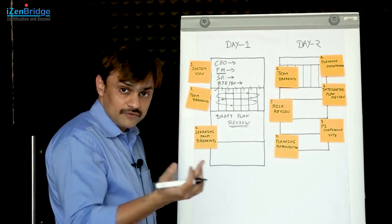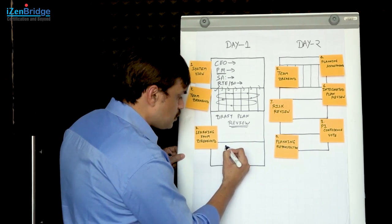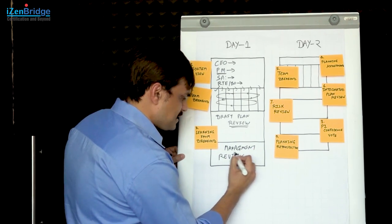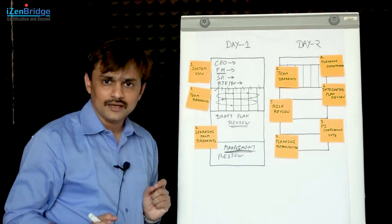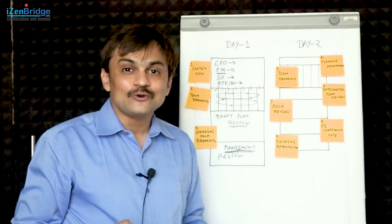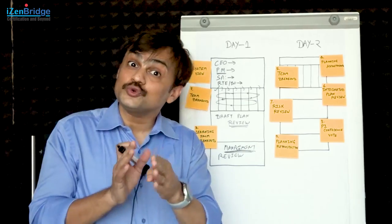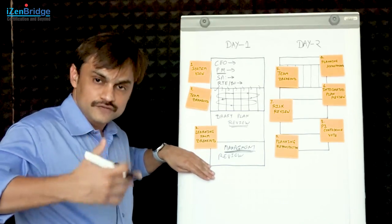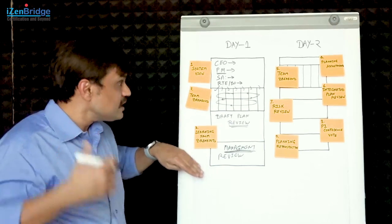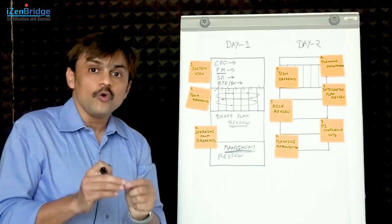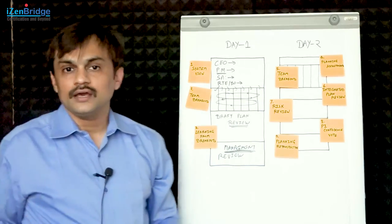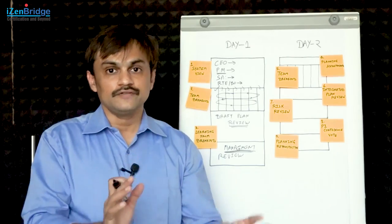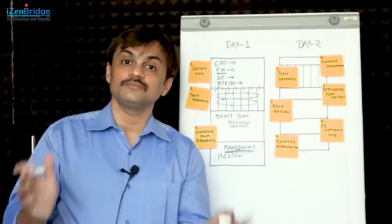Based on that, we may have a list - the release train engineer may facilitate making that list and we may do something called management review and problem solving. Many times I get the question: who is this management and what is this management review? Scaled Agile does not give you an answer on who this management is - you need to figure out who is this management for your Agile release train. But the idea is, depending upon the nature of your work, you may have some set of stakeholders who are expected to make decisions here so that we can have a workable plan. That is the whole purpose of doing this PI planning meeting. Unlike the traditional way where one business department just gives their requirement and expects the delivery team to figure out how to achieve it.